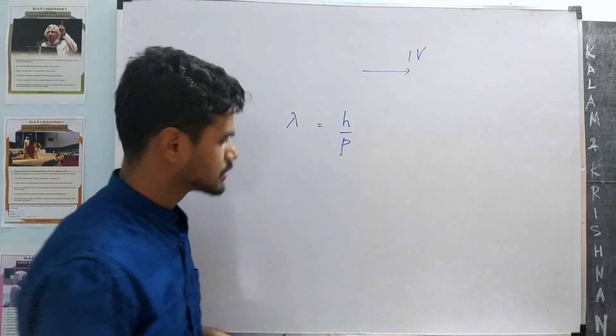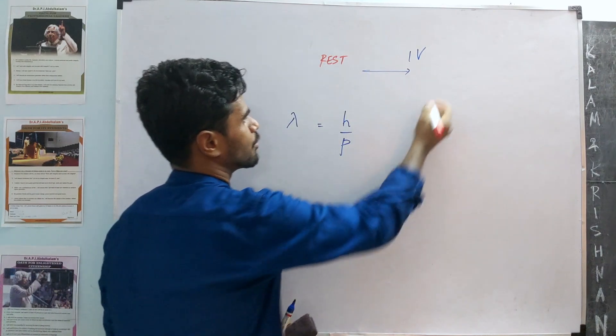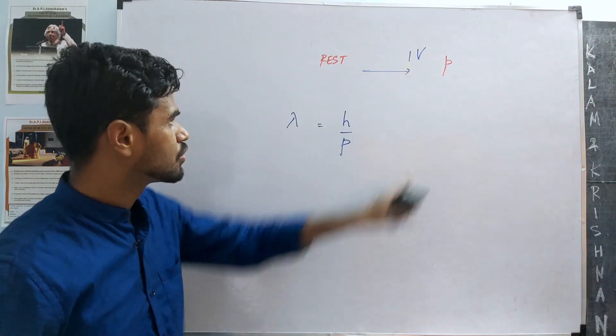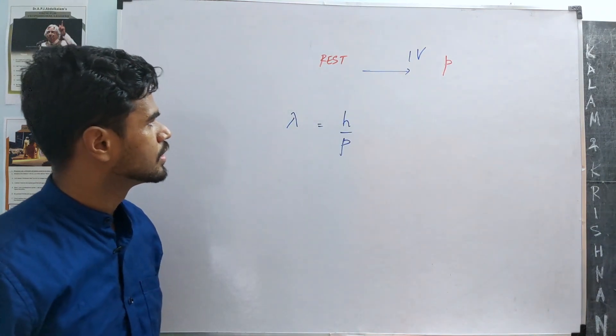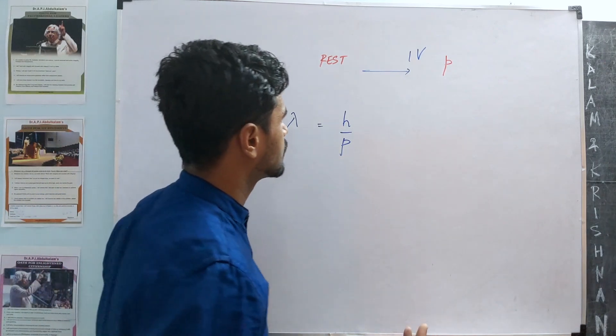Initially, an electron is at rest. It gains some momentum P as it gets accelerated through a potential of 1 volt. So this is just use of energy conservation.